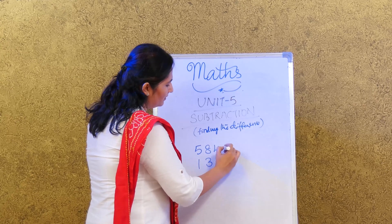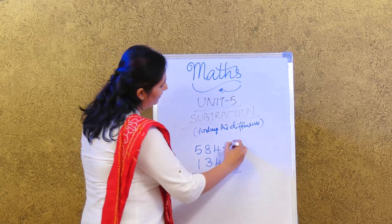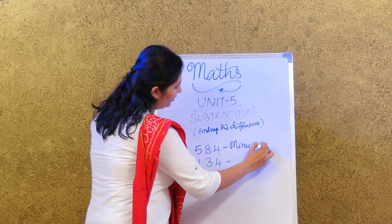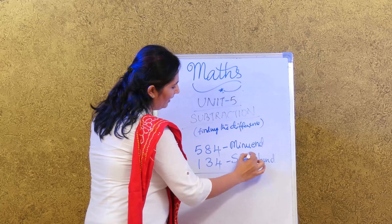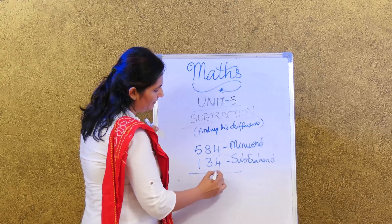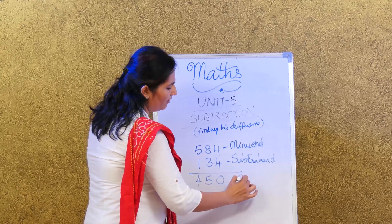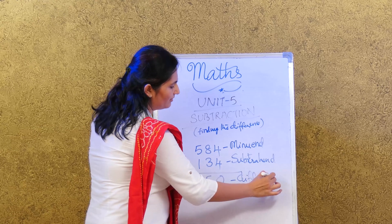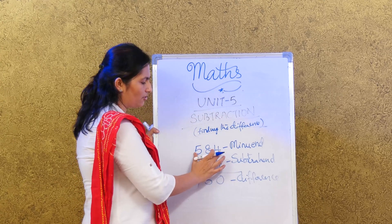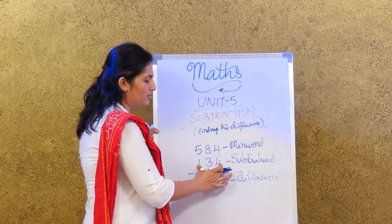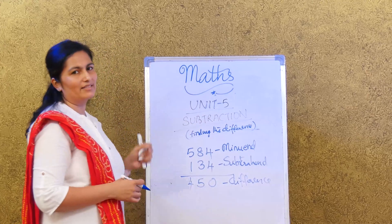The first number is called the minuend and this is called the subtrahend, and the answer that we get is called the difference. The first number on the top will be the minuend and the second one is the subtrahend, and when we subtract both you get the answer that is called the difference.